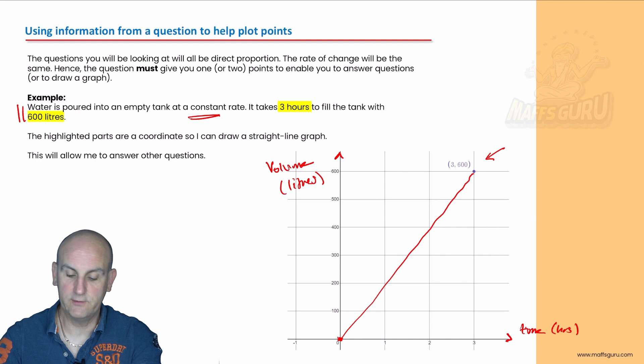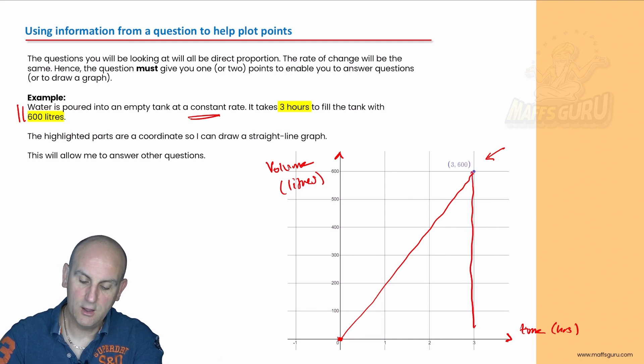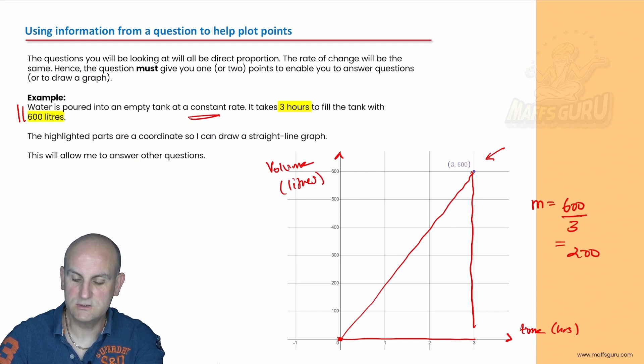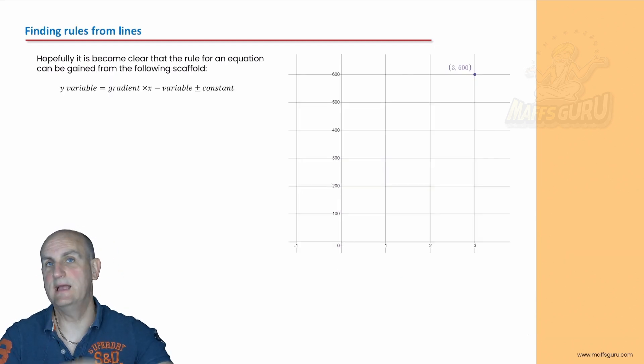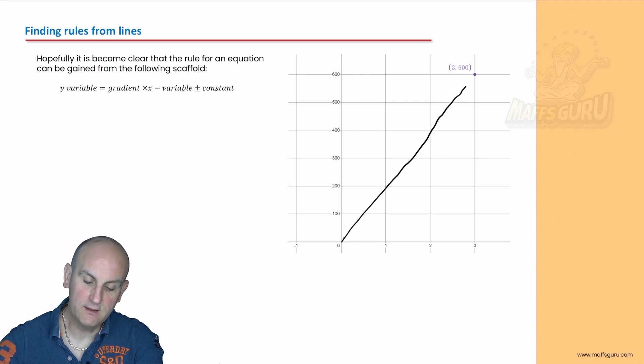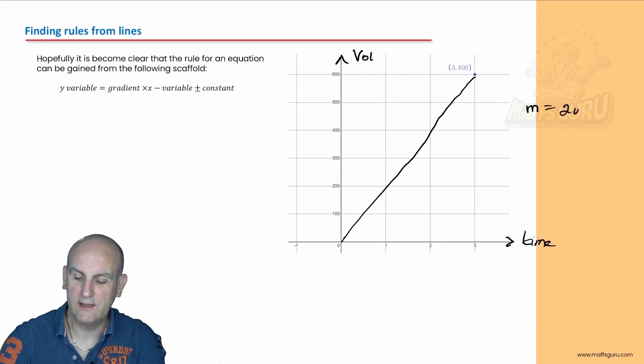So having got that data point, what can we do? Well, we can work out my gradient. And again, my gradient is going to be a rise over run. And my gradient there is going to be 600 divided by three, which is 200. That's my gradient. Now, as it turns out, pretty much every question is going to want you to find an equation or a rule from this direct proportional or from points you've got. So I'm going to join those two together. There we go. There's my two joined together.